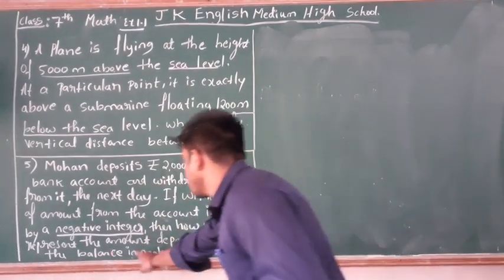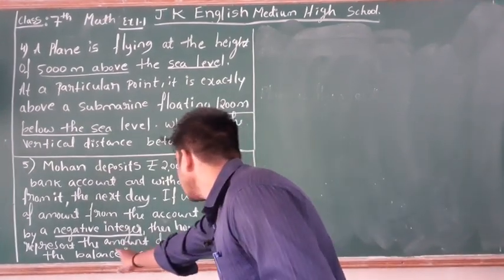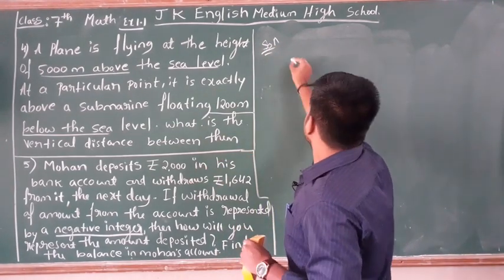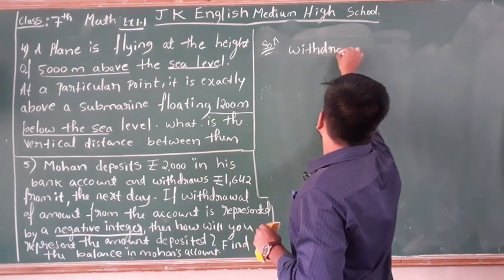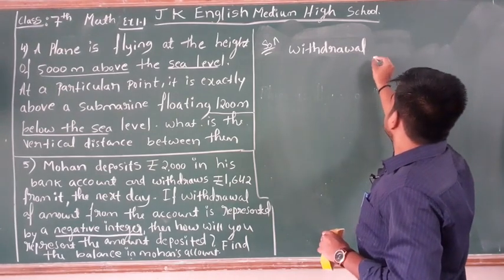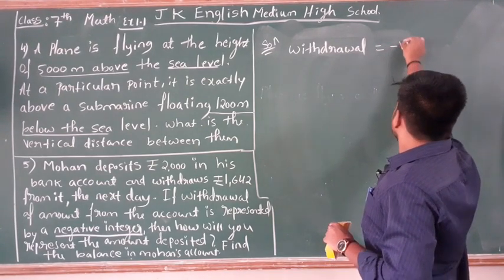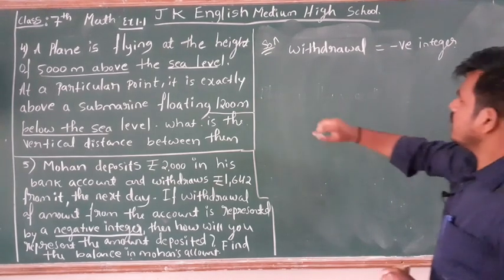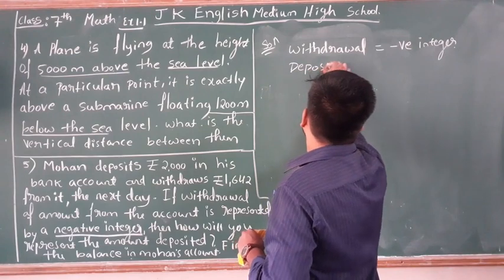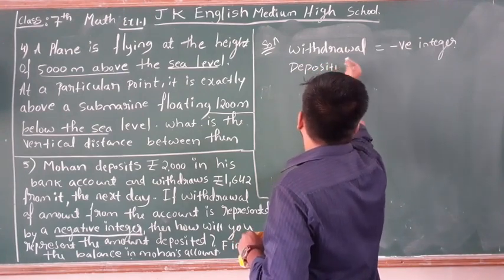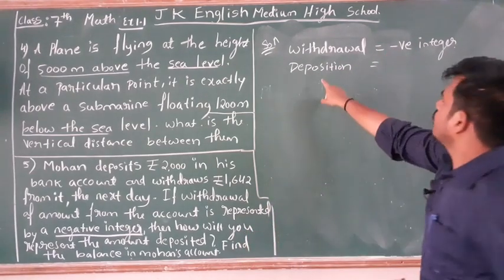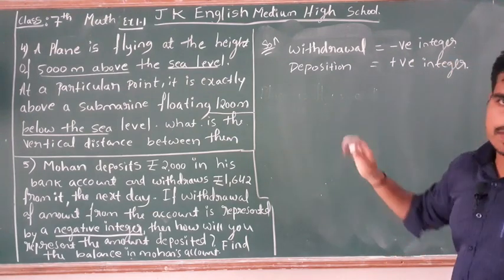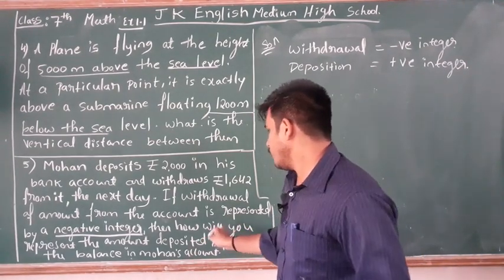Solution for the first part: if withdrawal is equal to a negative integer, then the deposit will become a positive integer. This is our first answer.